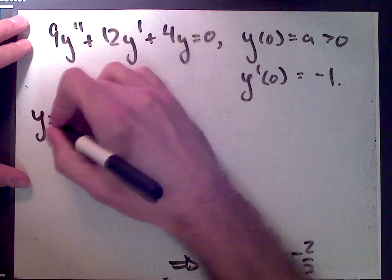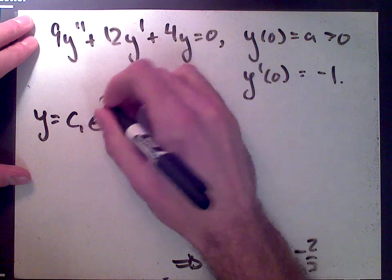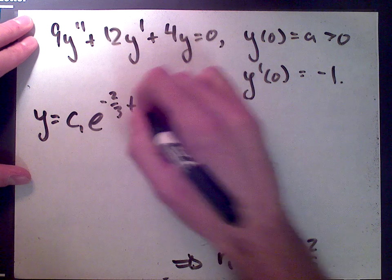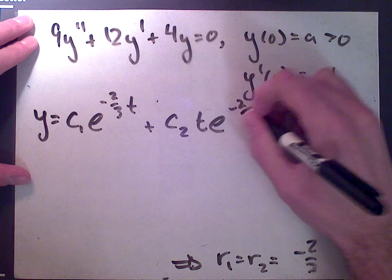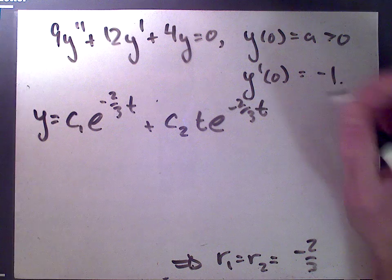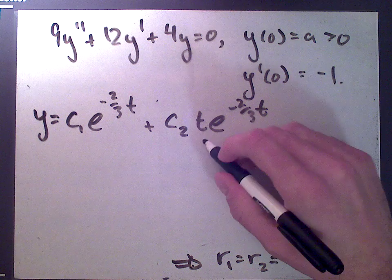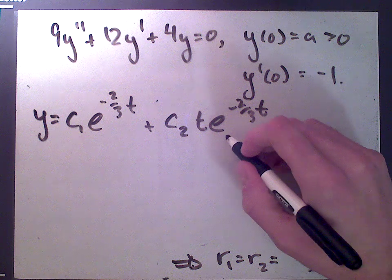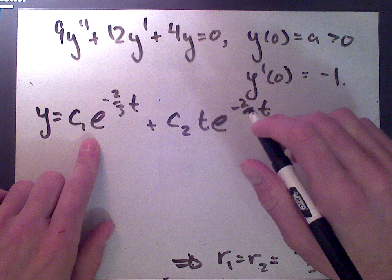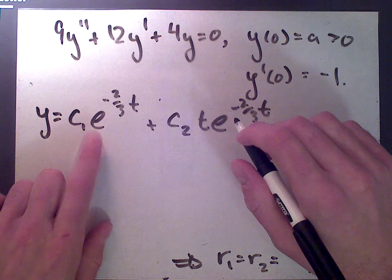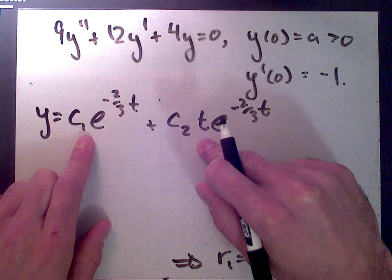With repeated roots, the solution has the form y = c1·e^(-2t/3) + c2·t·e^(-2t/3). We need two linearly independent solutions, so we multiply the second solution by t. No scalar multiple of t·e^(-2t/3) can equal e^(-2t/3), since one has a factor of t and the other doesn't, ensuring linear independence.